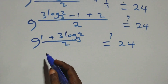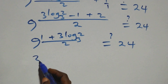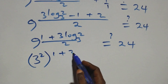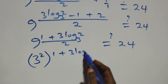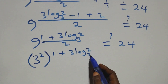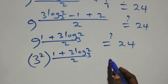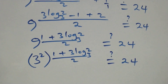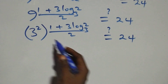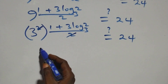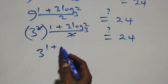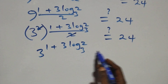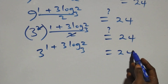We express nine as three squared, raised to the power of one plus three log two base three, all over two. The twos cancel from the exponent, giving us three raised to the power one plus three log two base three. Does this equal twenty-four on this side?